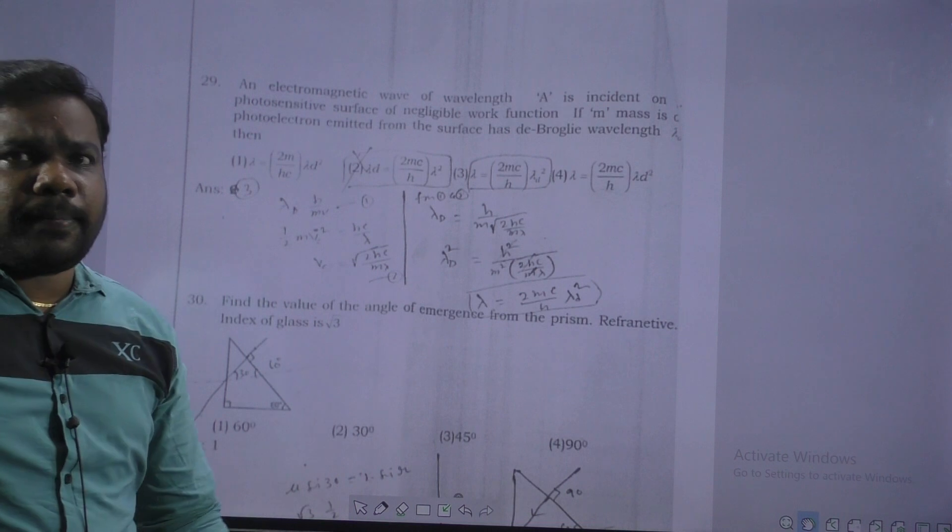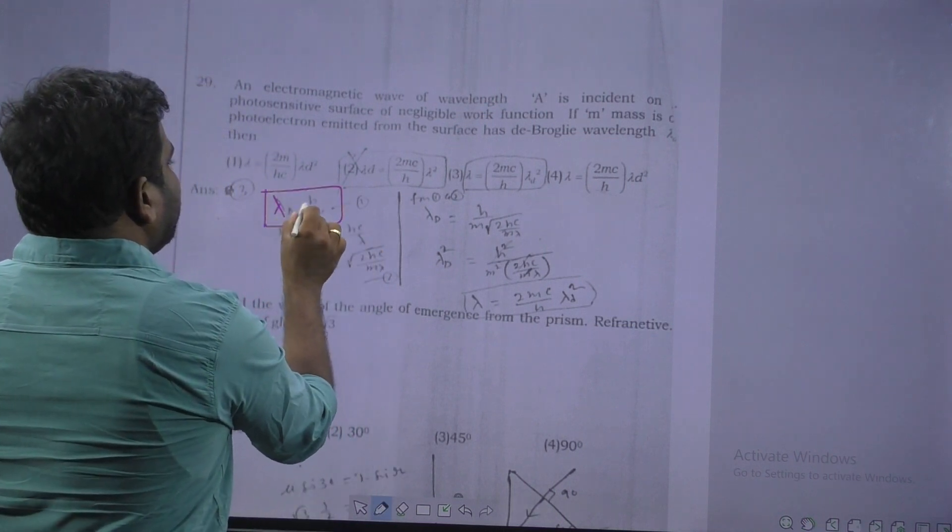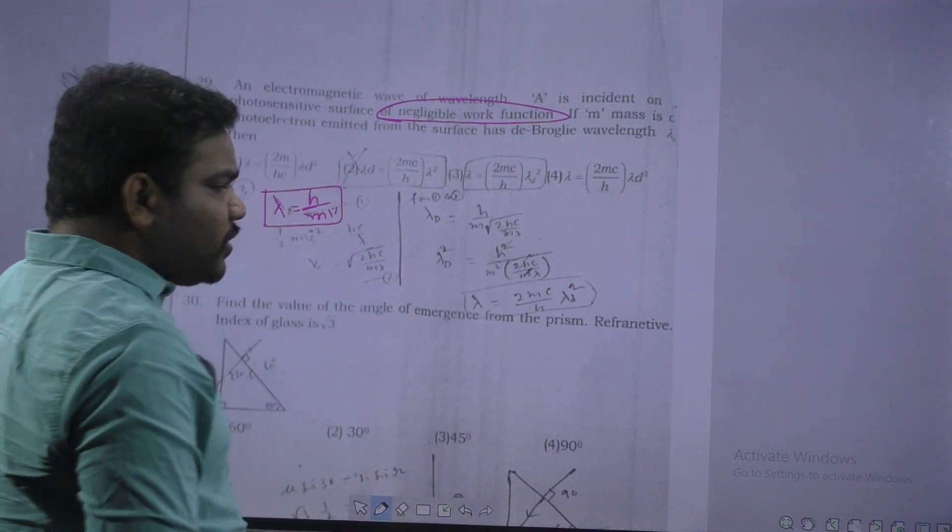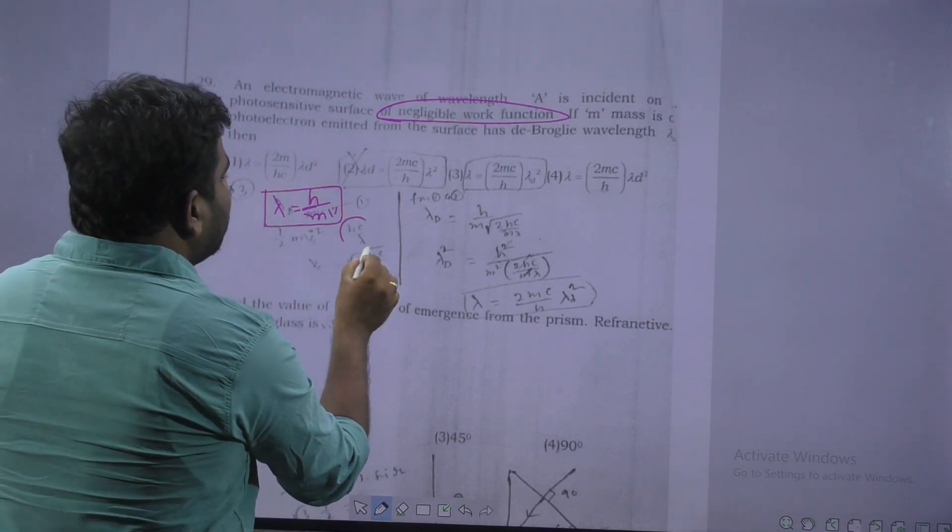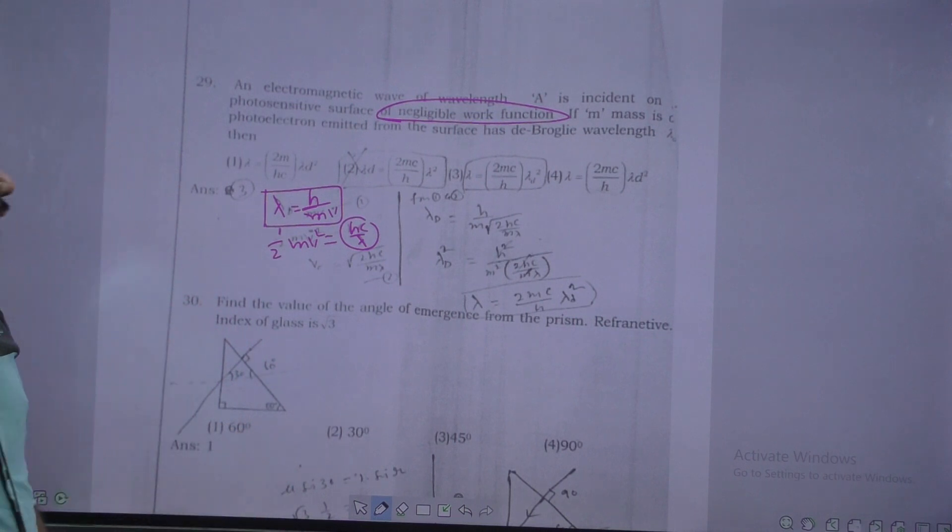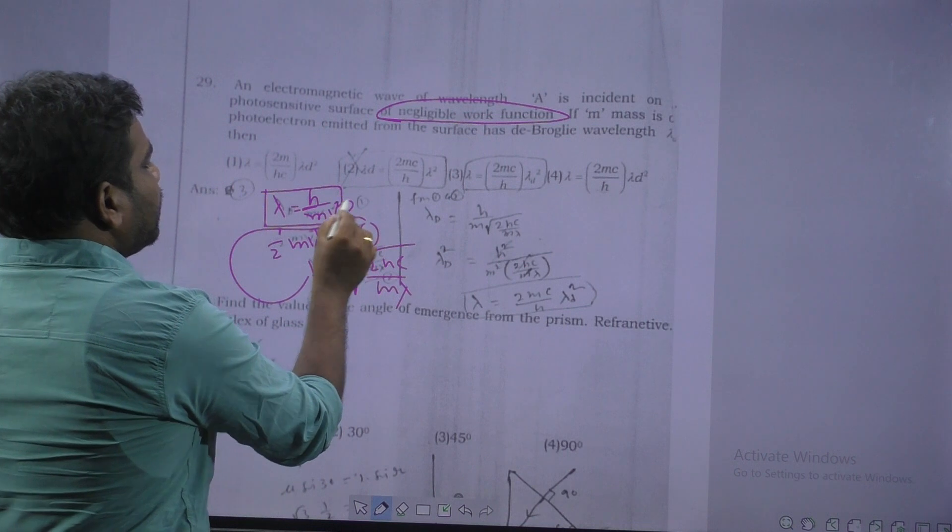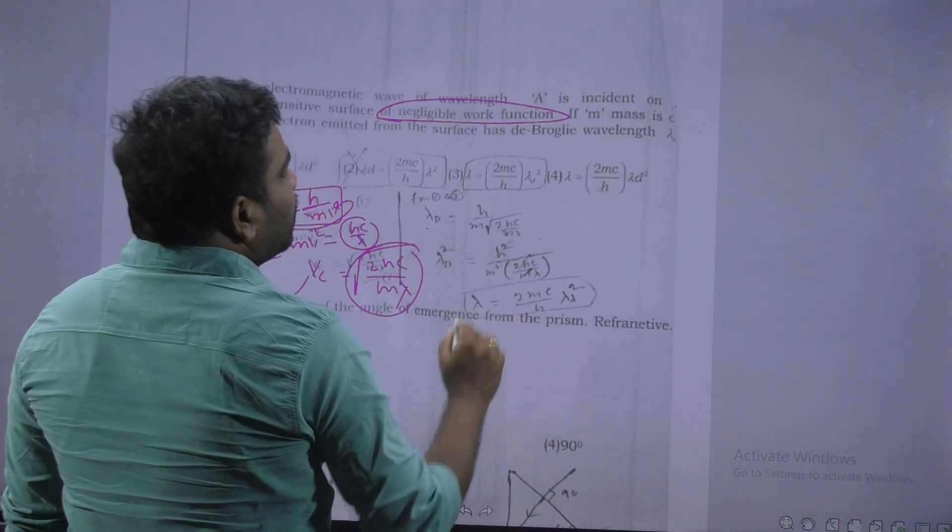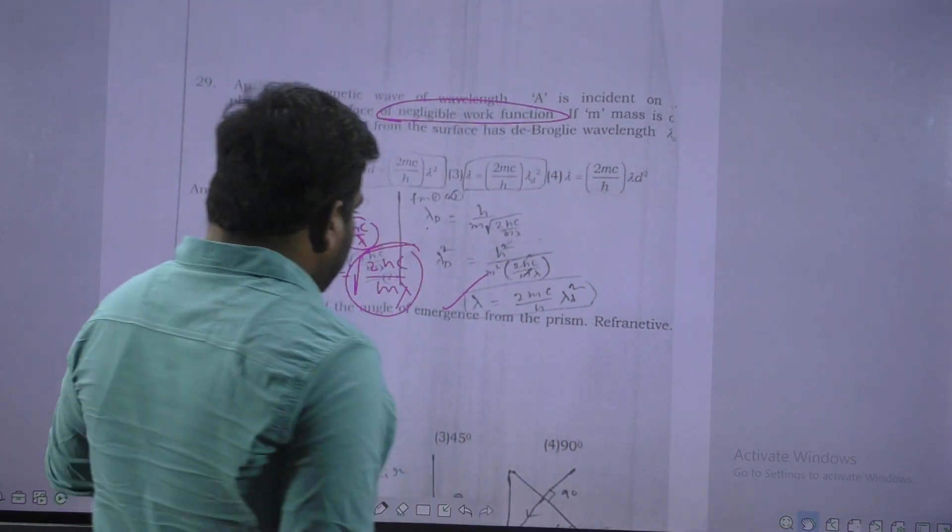Next. This is a de Broglie wavelength based problem. Lambda D is equal to H by MV. But the problem they are given negligible work function. That means energy is equal to work function plus kinetic energy. That energy can be written as Hc by lambda. Work function should neglect. Then that is half MV square is equal to Hc by lambda. Prepare that V, that is square root of 2Hc by M lambda. Now substitute this V here, then lambda D is equal to, in the place of V, just substitute this one. After simplify, we get lambda is equal to 2MC by H into lambda D squared.